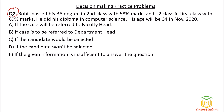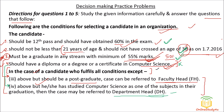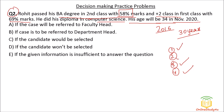Question number two: Rohit passed his BA degree in second class with 58 percent — so in graduation, any stream is fine and he scored more than 55 percent, so condition three is satisfied. He passed his plus two, so condition one also satisfies. He did his diploma in computer science, so condition four also satisfies. His age will be 34 in 2020, meaning in 2016 his age will be 30 years.